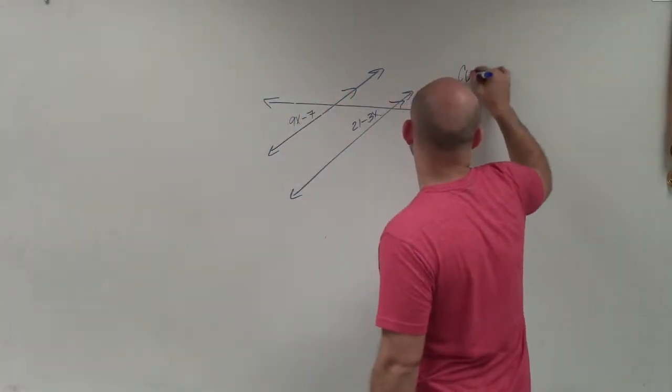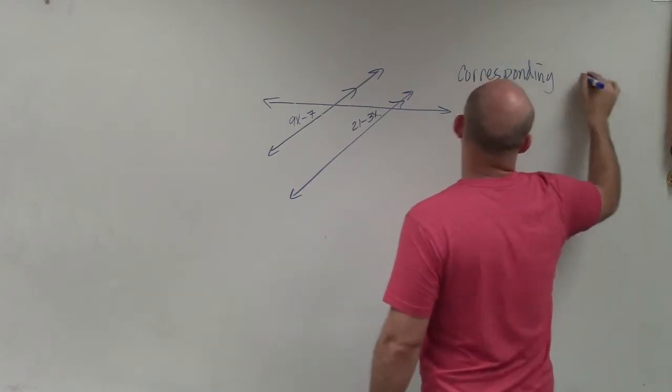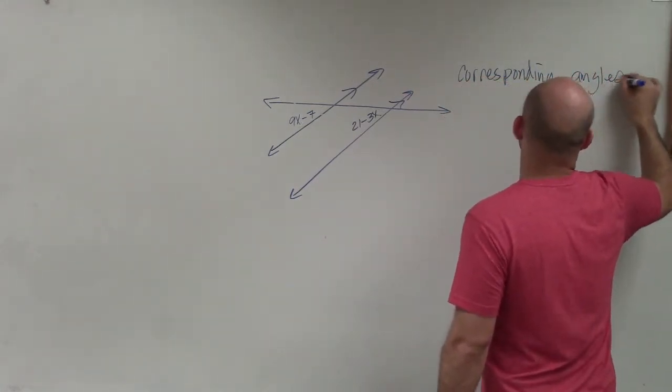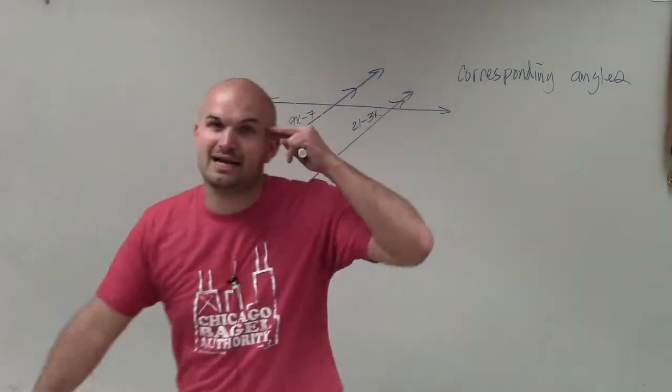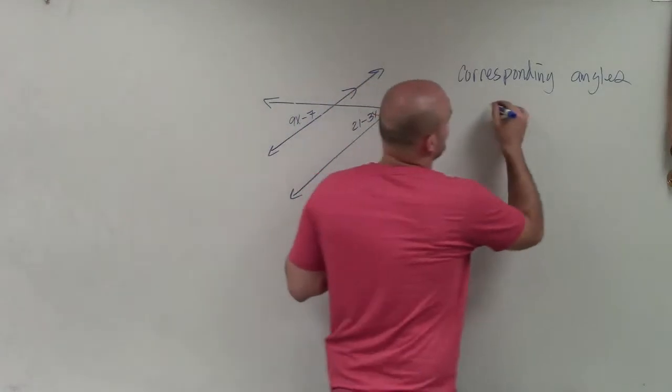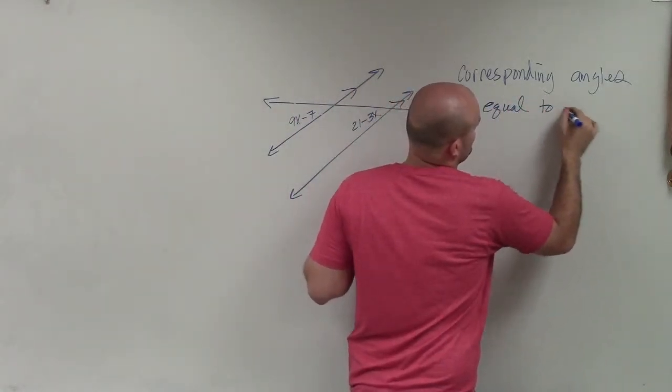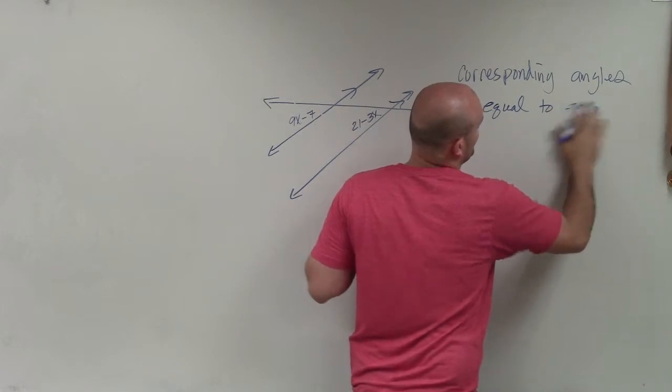So I am going to make sure I label this. These are corresponding angles. Now, how do corresponding angles relate to each other when the two lines are parallel? Corresponding angles are equal to each other, or equal in measure.